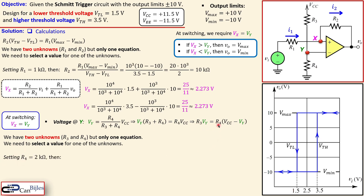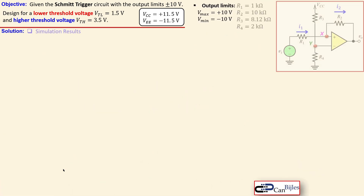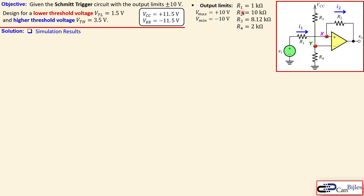Selecting R4 = 2 kΩ, we solve for R3: R3 = R4 × (Vcc − VY) / VY = 2000 × (11.5 − 25/11) / (25/11) ≈ 8.12 kΩ. We have now determined all four resistors: R1 = 1 kΩ, R2 = 10 kΩ, R3 = 8.12 kΩ, and R4 = 2 kΩ.